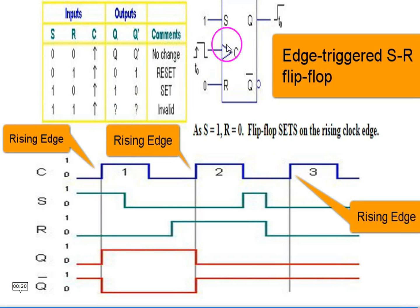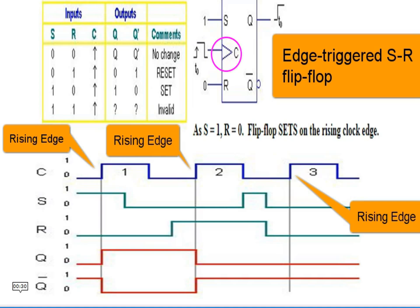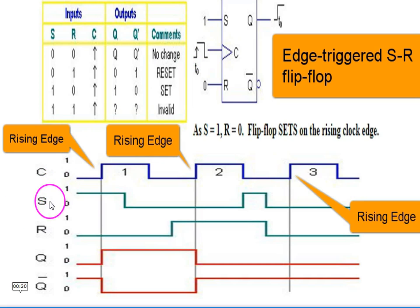Here is the symbol of the edge-triggered RS flip-flop. Notice this triangle — this is for rising-edge triggering. The symbol for rising-edge triggered looks like this; the triangle represents the rising edge.